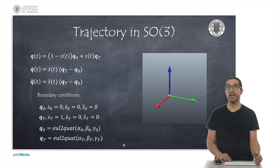To generate a smooth trajectory between both orientations, we can use the linear expression that I indicate here, where S is a trajectory of dimension one that varies between zero and one. And this is computed using the fifth order expression that we have already seen. Usually, the boundary conditions for this trajectory are zero for initial velocities and final velocities and accelerations.